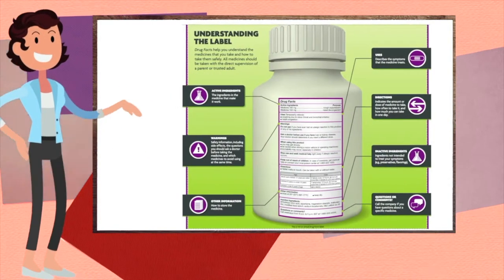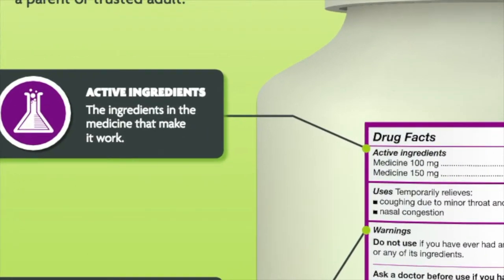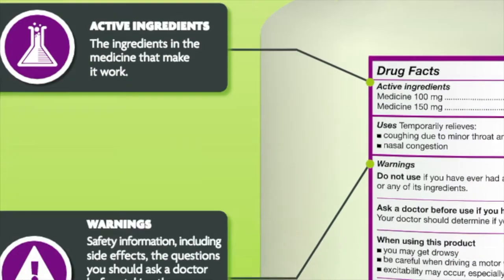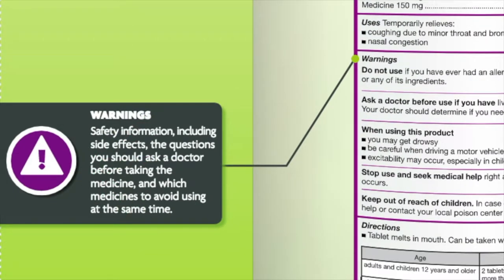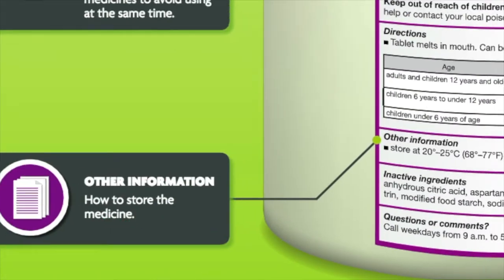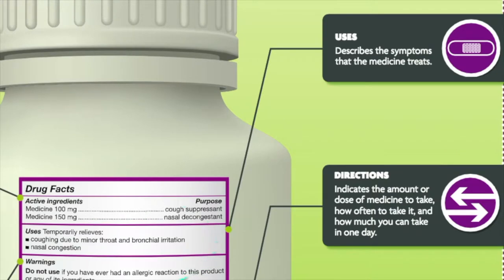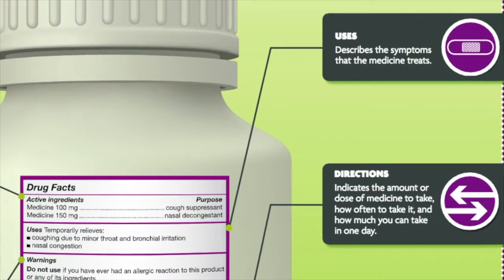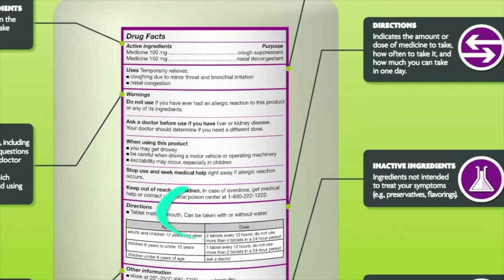Some vocabulary words to consider: Active ingredients — the ingredients in the medicine that make it work. Warnings — safety information including side effects, the questions you should ask a doctor before taking the medicine, and which medicines to avoid taking at the same time. Other information — how to store the medicine. Uses — describes the symptoms that the medicine treats. Directions — indicates the amount or dose of medicine to take, how often to take it, and how much you can take in a day.